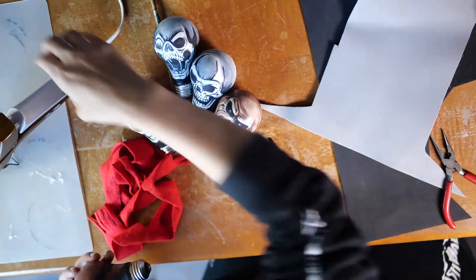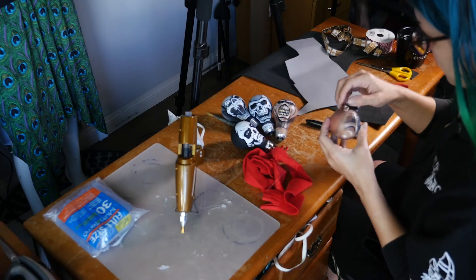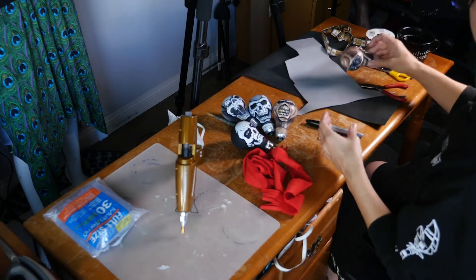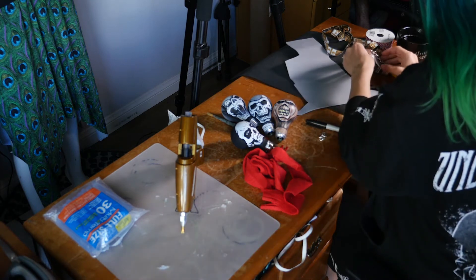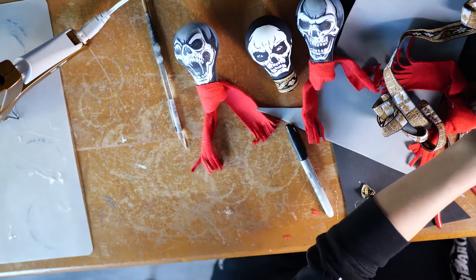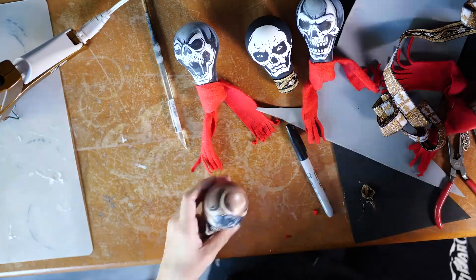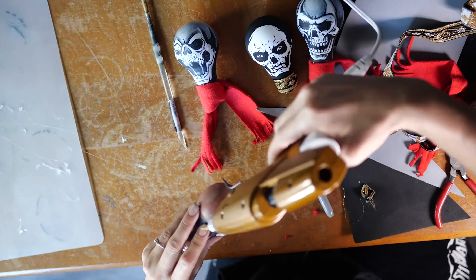Now I'm going to put a dab of hot glue along the side of the head. And I'm going to lay down the piece of chain. Try not to touch the hot glue. It'll burn. And then once that dries then you're ready to glue the other side.